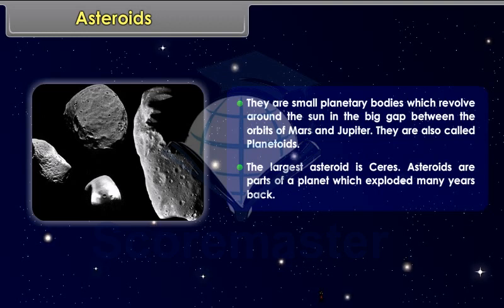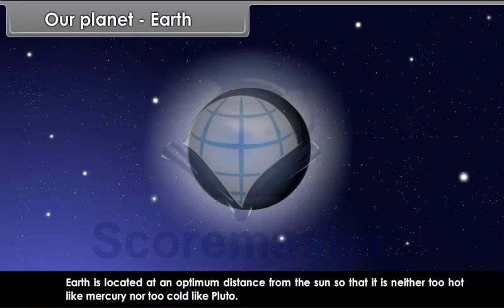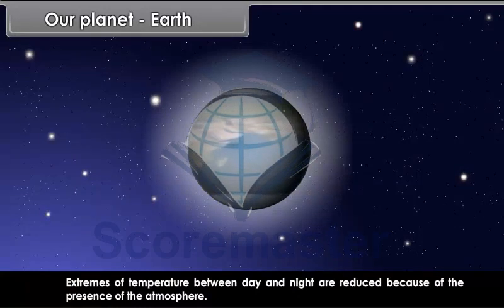Our planet Earth. Earth is located at an optimum distance from the Sun, so that it is neither too hot like Mercury, nor too cold like Pluto. Extremes of temperature between day and night are reduced because of the presence of the atmosphere.